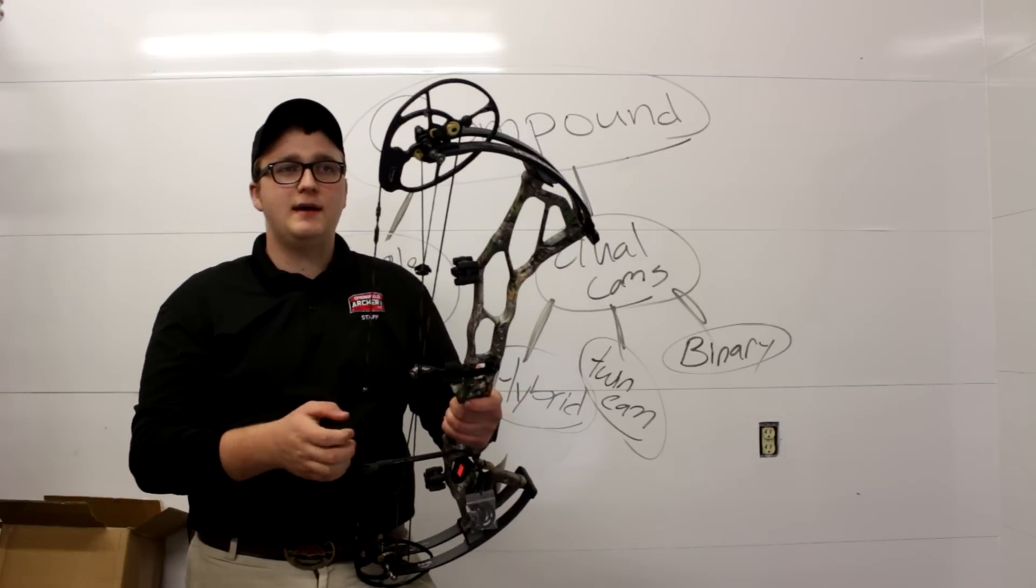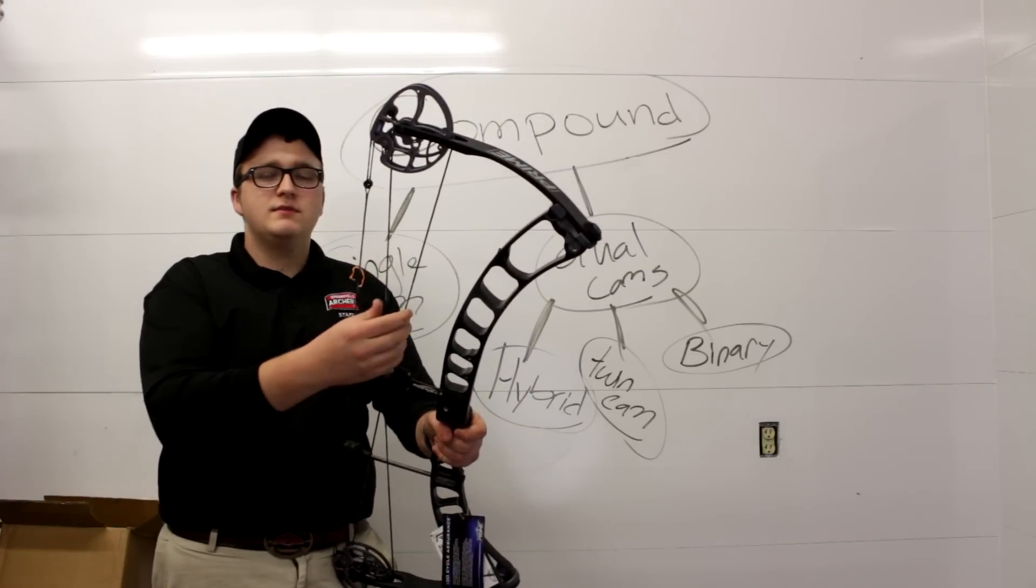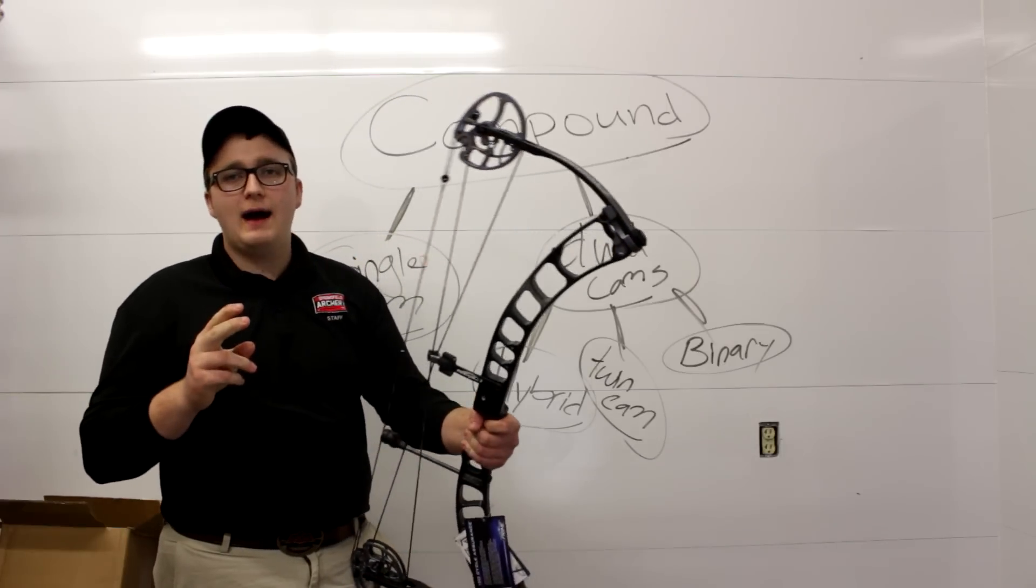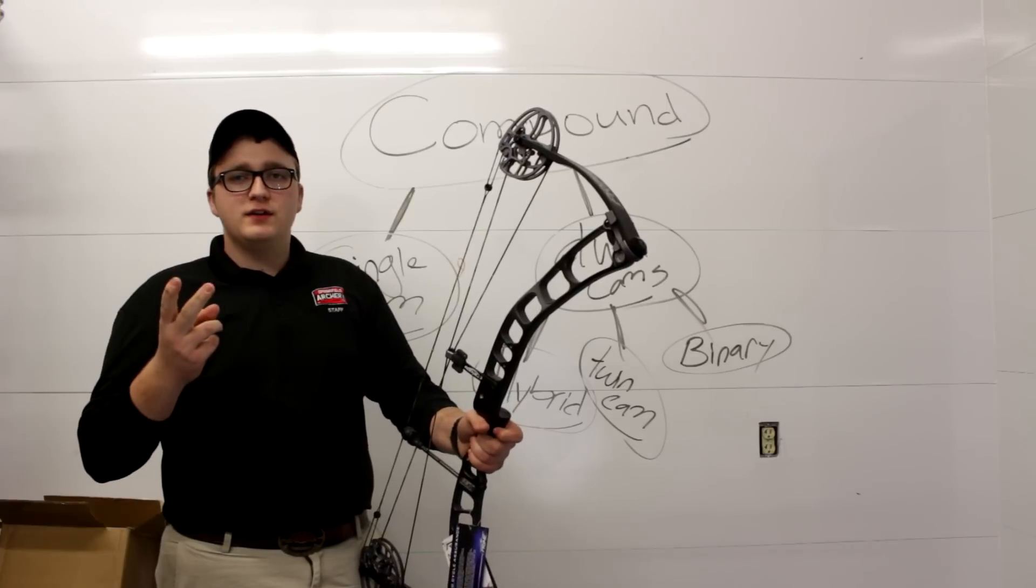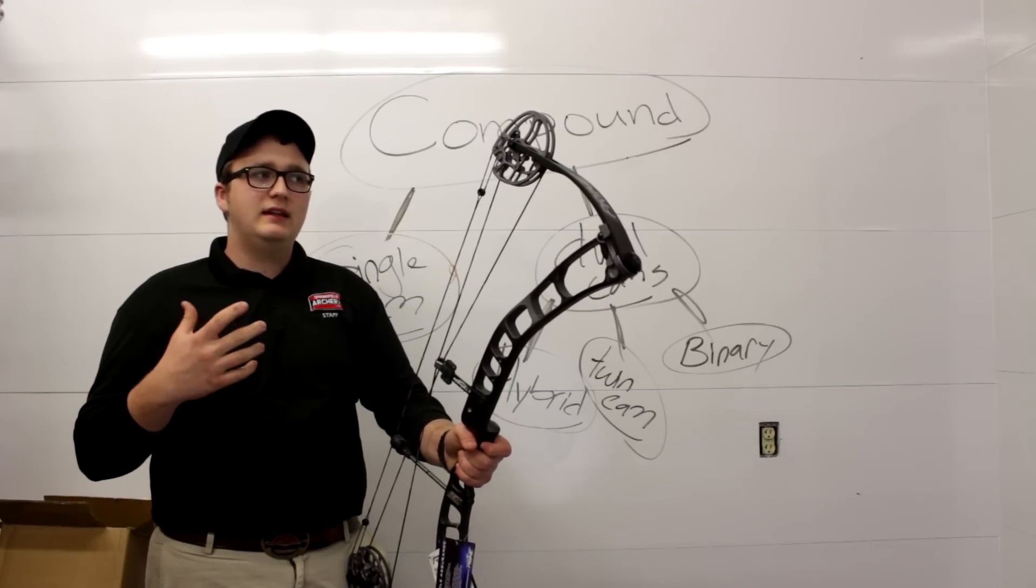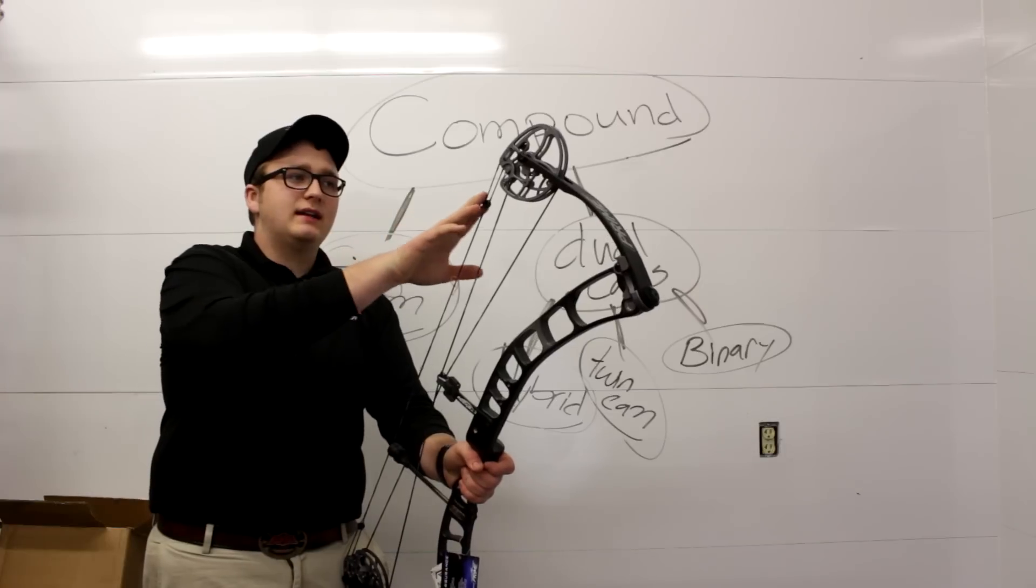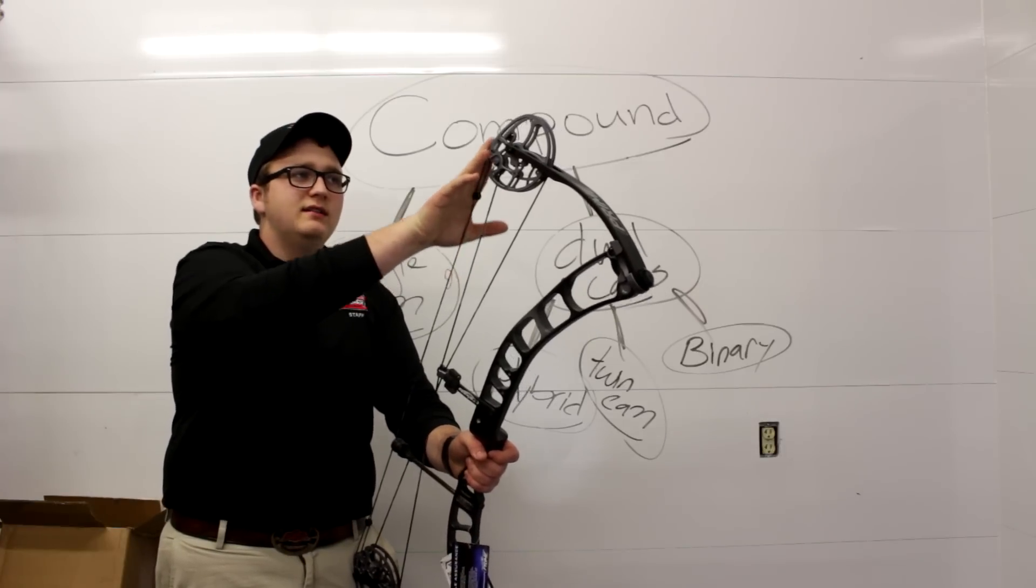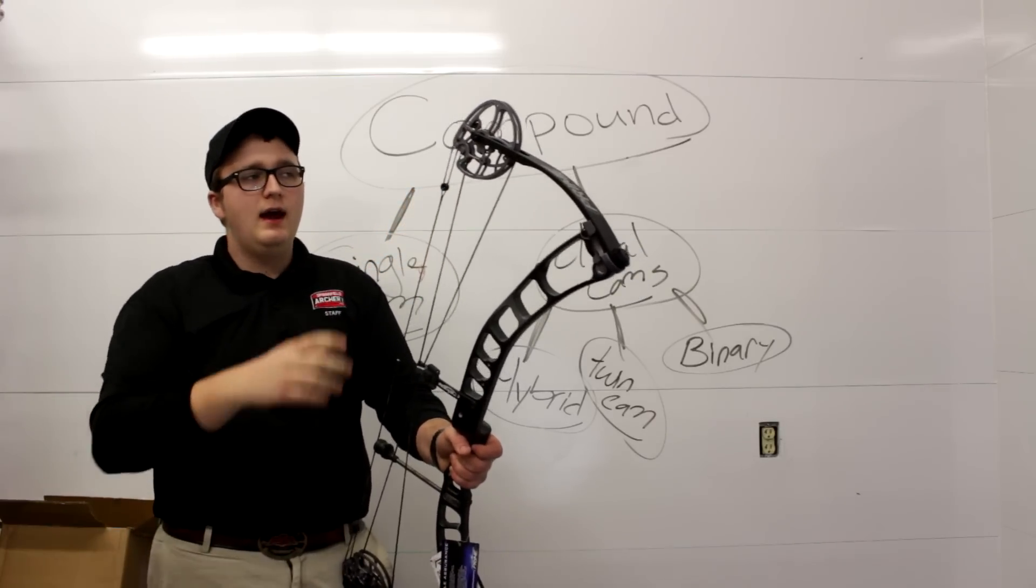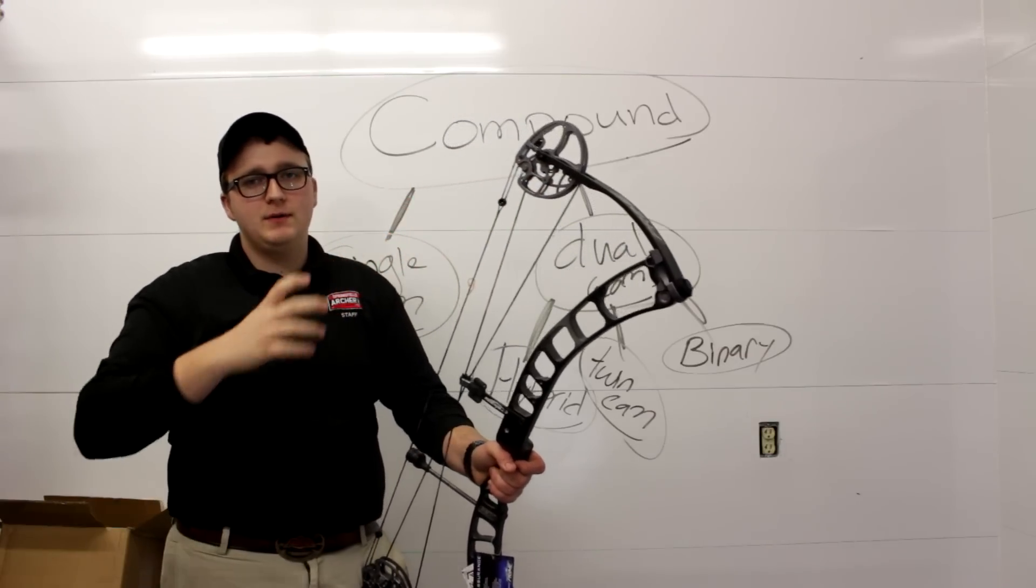The last cam system I'm going to be going over is the binary cam system. This cam system utilizes two control cables as well as the bow string. There's two different options. As far as binary cams go, you've got your two-track and your three-track. Two-tracks are real common amongst the elites. Three-track, on the other hand, is used by Bowtech. Technically, the Prime is a three-track, even though in theory it's a two-track. I'll go over that here in just a little bit. I'm actually planning on making a video going over the Prime Cam in particular.